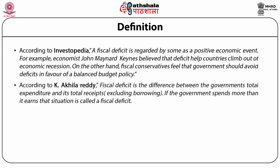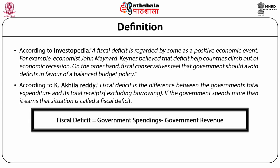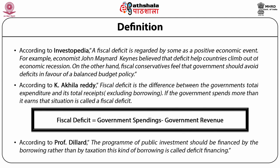According to K. Akhila Reddy, fiscal deficit is the difference between the government's total expenditure and its total receipts, excluding borrowing. If the government spends more than it earns, the situation is called a fiscal deficit. Thus, fiscal deficit equals government spending minus government revenue. Professor Dilard also defines it as the program of public investment that should be financed by borrowing rather than by taxation — this kind of borrowing is known as deficit financing.